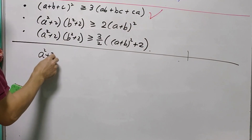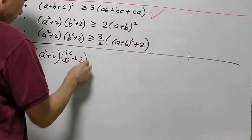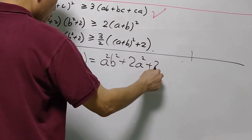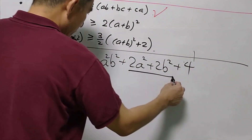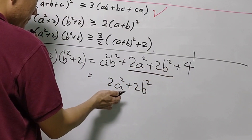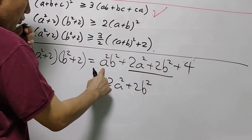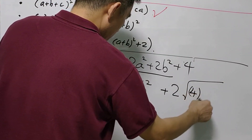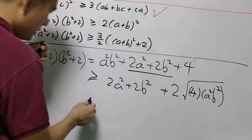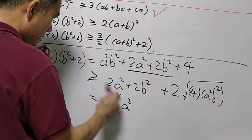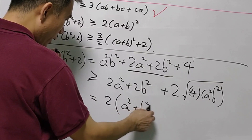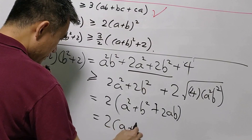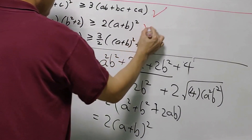For the second result: (A²+2)(B²+2). When you expand this, it equals A²B²+2A²+2B²+4. The 2A²+2B² terms remain. Using AM-GM inequality, A²B²+4 ≥ 2√(4·A²B²) = 2·2AB = 4AB. So the whole expression is ≥ 2A²+2B²+4AB = 2(A+B)². We have shown the second result.